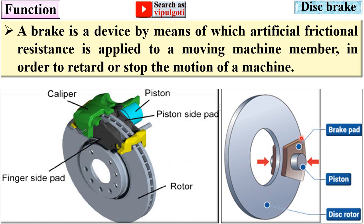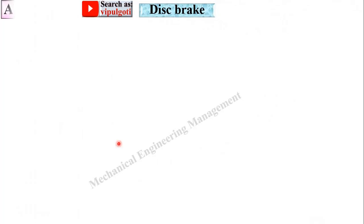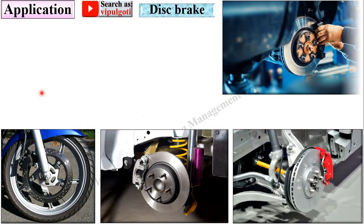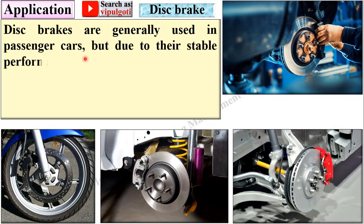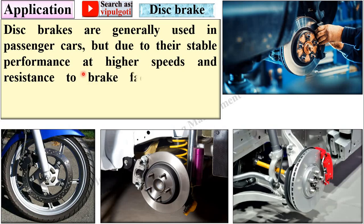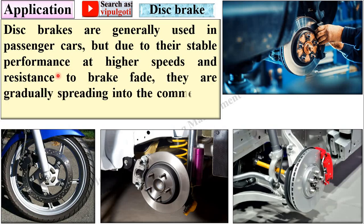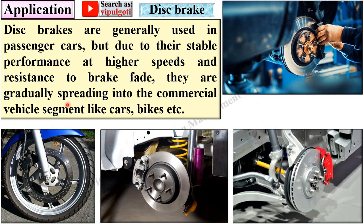Here you can see a simple figure of the disc brake with more details. Now the applications of the disc brake: disc brakes are generally used in passenger cars, but due to their stable performance at higher speeds and resistance to brake fade, they are gradually spreading into the commercial vehicle segment like cars and bikes.